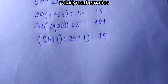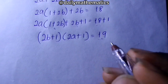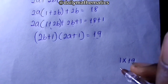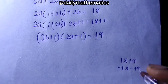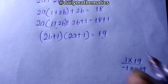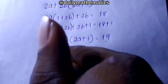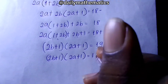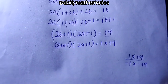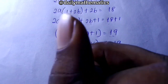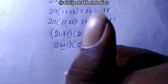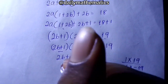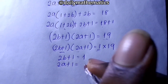Now we find the factors of 19. We have 1 times 19, and we have minus 1 times minus 19. Using the first factor: (2b plus 1)(2a plus 1) equals 1 times 19. We can equate each bracket: 2b plus 1 equals 1, and 2a plus 1 equals 19.